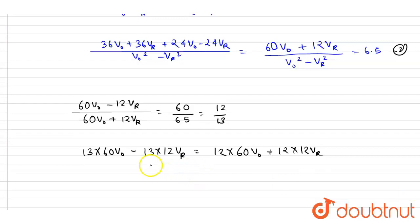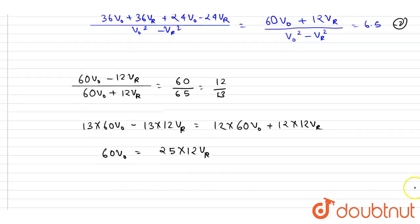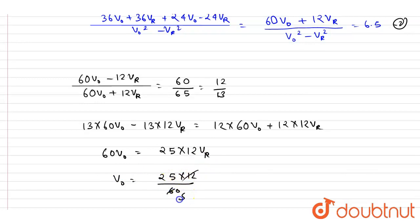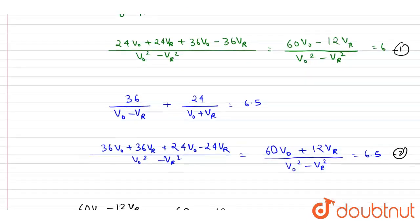Collecting v-naught and vr terms on one side: the coefficient of vr becomes 12 plus 13, which is 25, and simplifying gives v-naught equals 25 times 12 divided by 60, which cancels to 5 vr. So v-naught equals 5 vr.